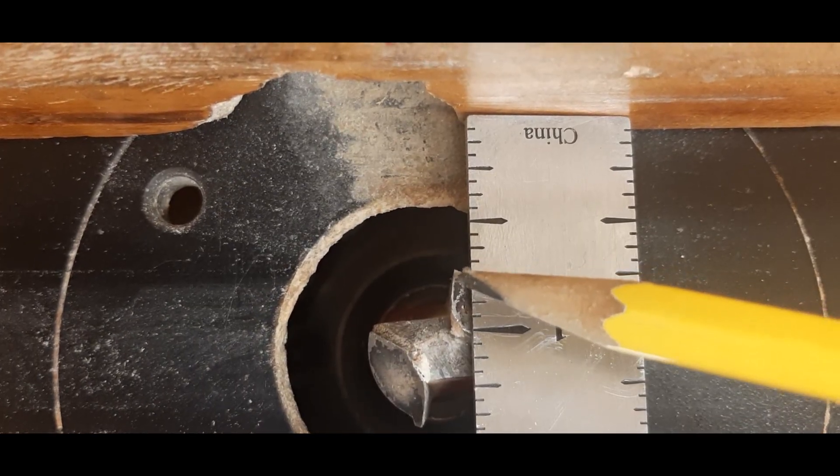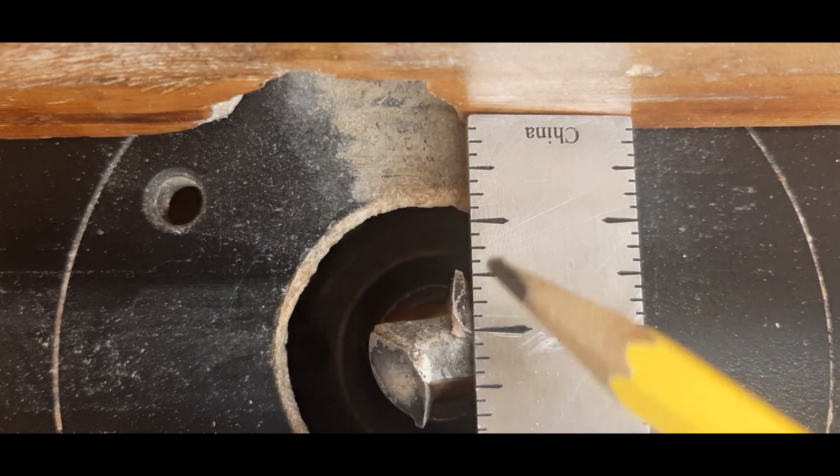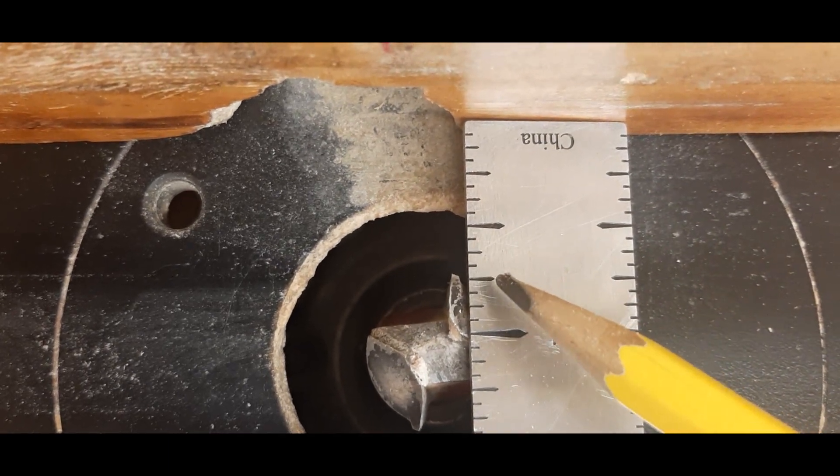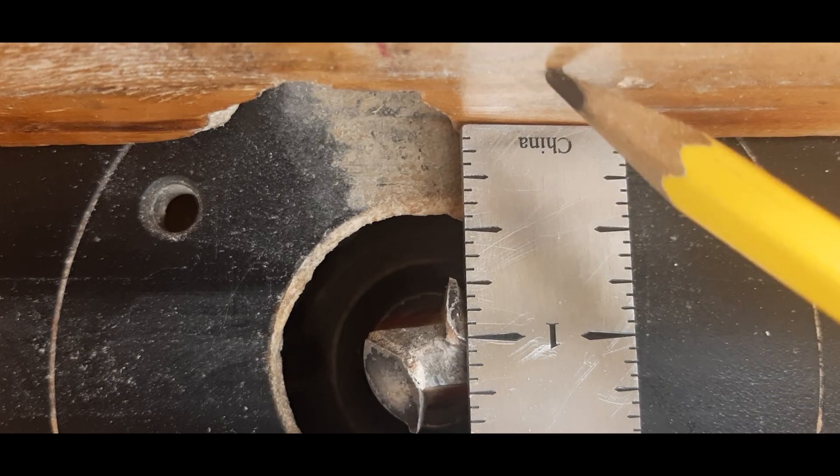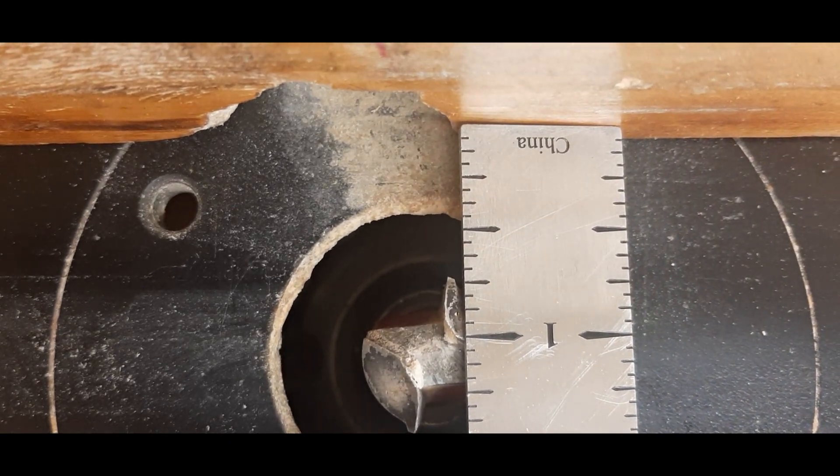There we go. The tip of this router bit, which is facing the fence, is exactly three quarters of an inch away from the fence over here. Our router bit's all set up.